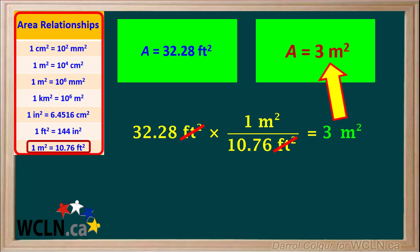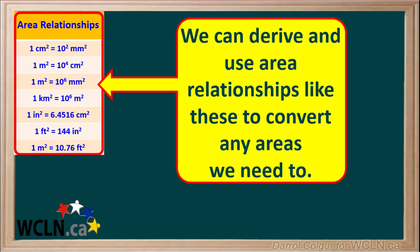So we can say the area of this rectangle is 3 square meters. Starting with length relationships, we can derive and use area relationships like these to convert any areas we need to.